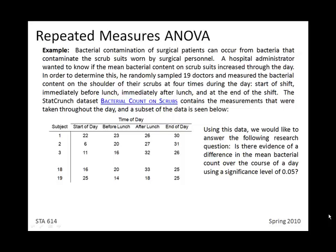This has a similar structure to the ANOVA problems we encountered in the previous notes. We have one response variable — recall that the response is the quantitative variable we want to compare across groups — and it seems reasonable that our response would be the bacterial count. We also have a factor, which is the qualitative variable we think has some effect on our response, and in this case that factor is time of day.